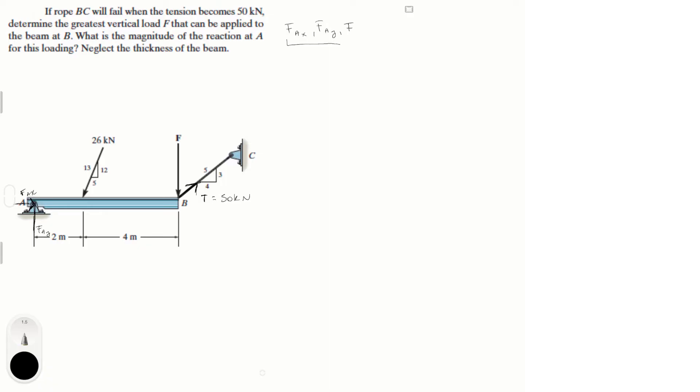So we have two variables that are happening at A, so a good place to start would be doing the sum of the moments about A. Assuming counterclockwise is positive, it's equal to zero. That way we eliminate those two and we can find that.